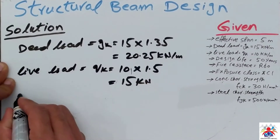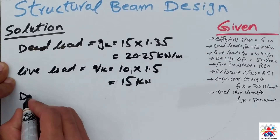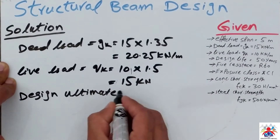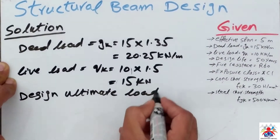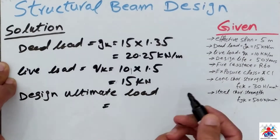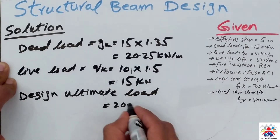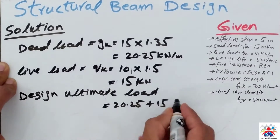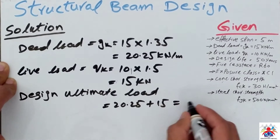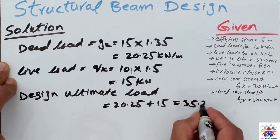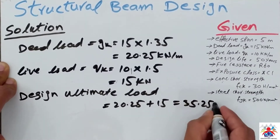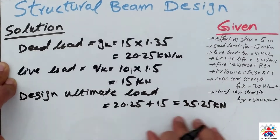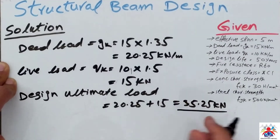Then we have to calculate the design ultimate load. The design ultimate load is the addition of the dead load and live load, which is 20.25 plus 15, giving us 35.25 kilonewtons. Based on this 35.25 kilonewtons we will carry on our calculations.